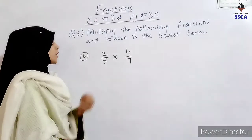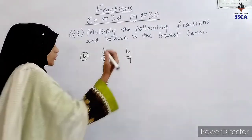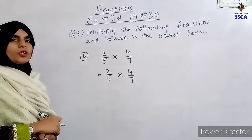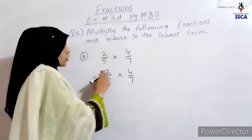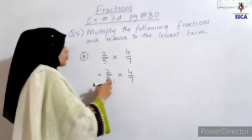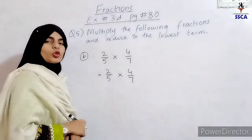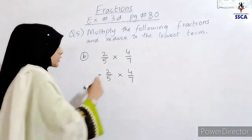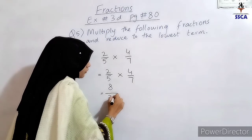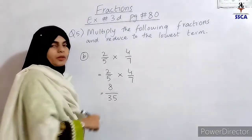Part B: the sum is 2 over 5 multiplied by 4 over 7. We check for cancellations. 2 and 4 — there is no cancellation between numerators and cross-denominators. So we multiply directly: 2 times 4 is 8, and 5 times 7 is 35. We get 8 over 35, which is a proper fraction because the numerator is smaller than the denominator.